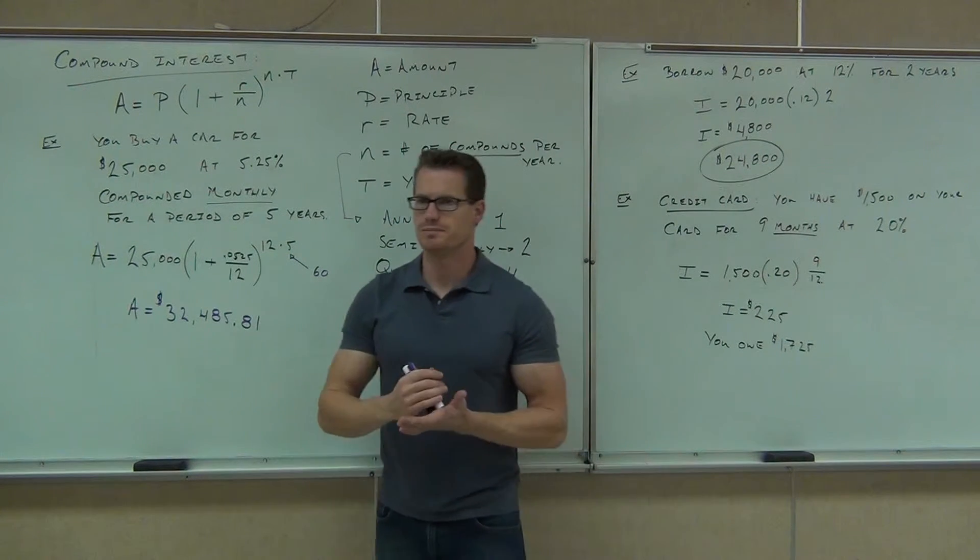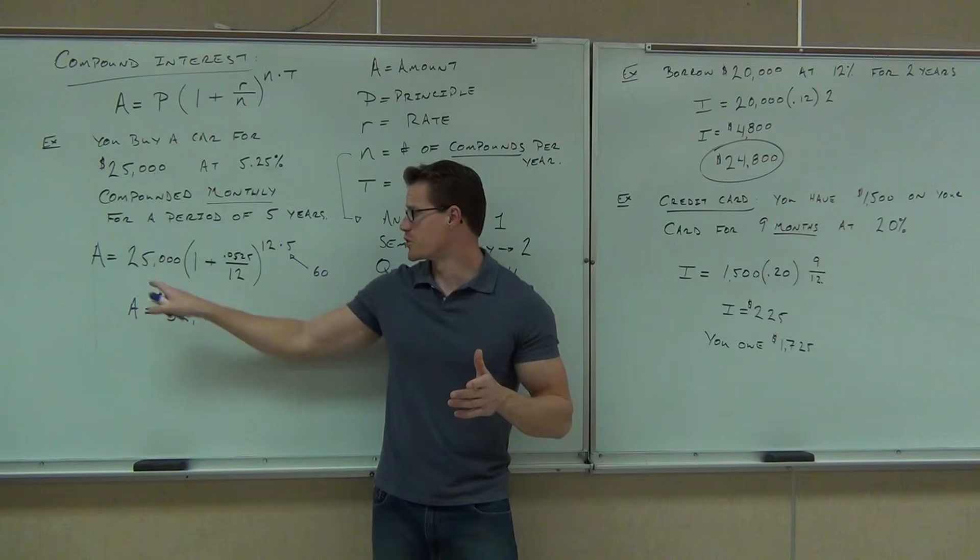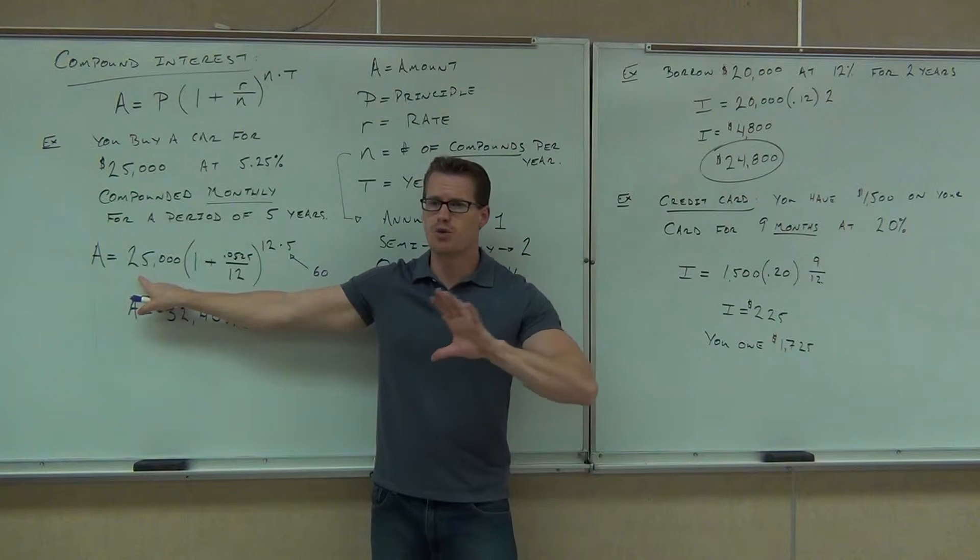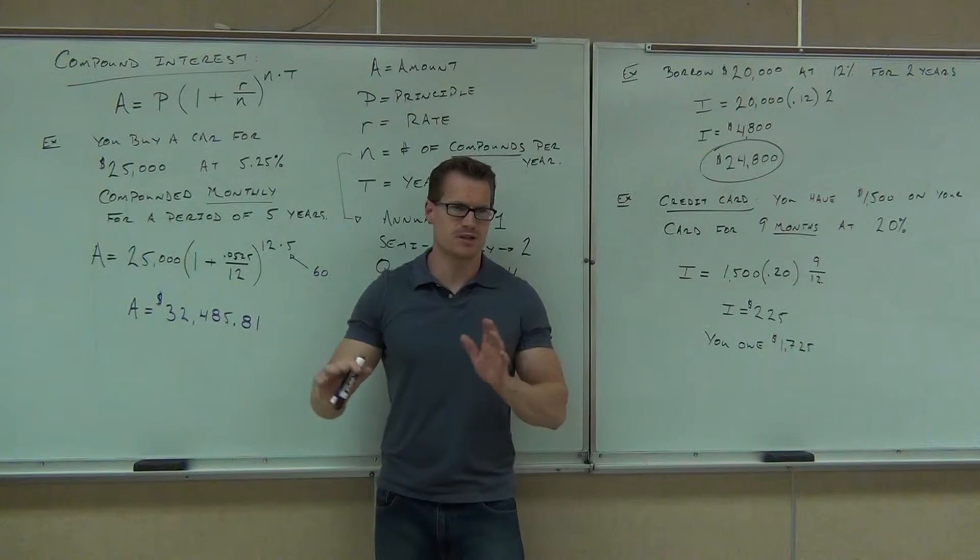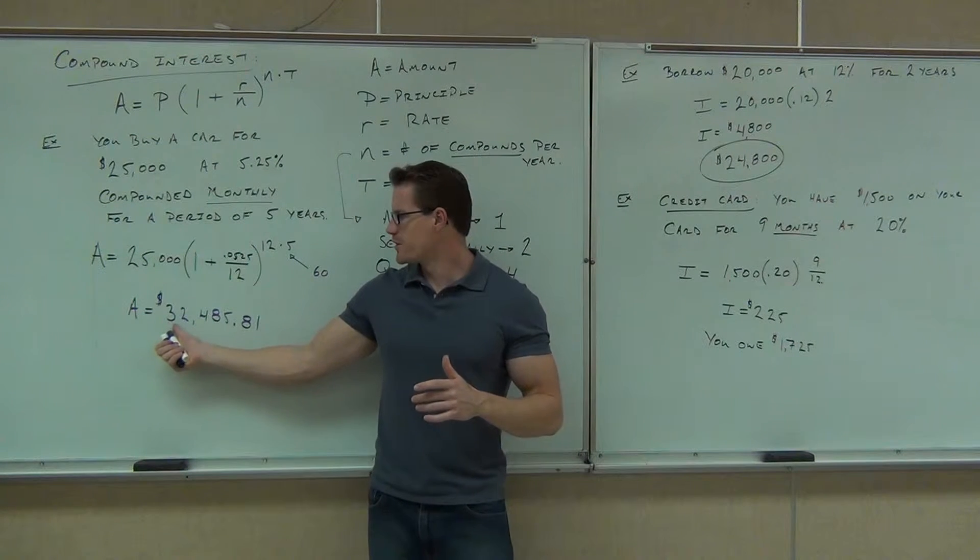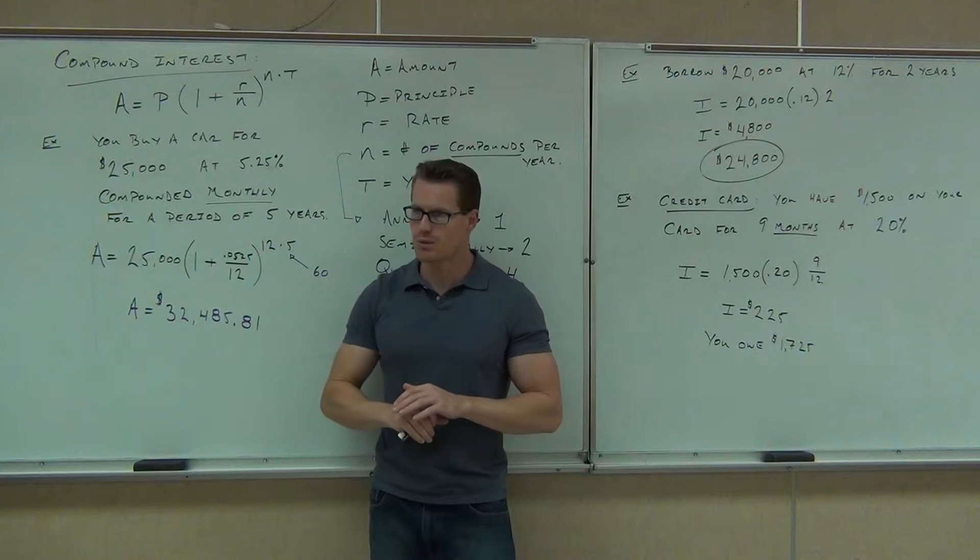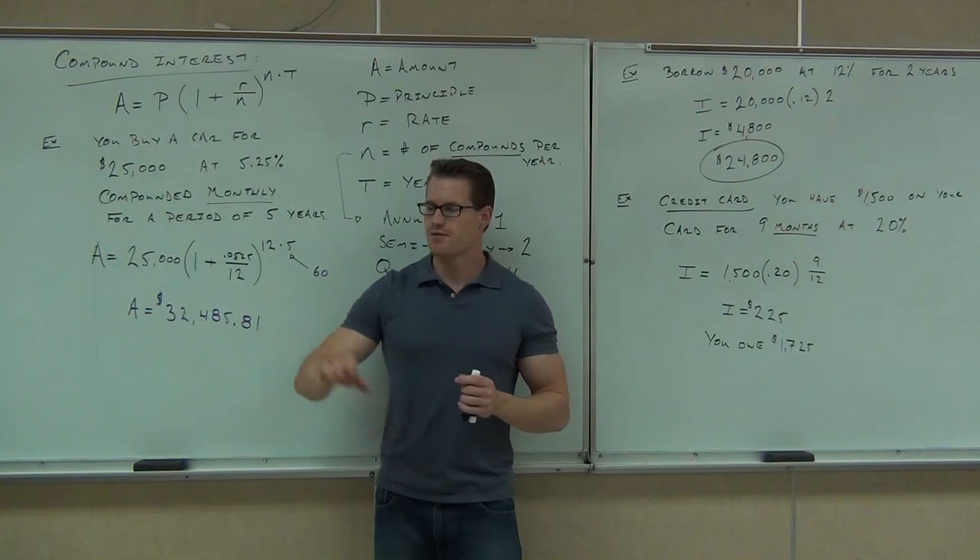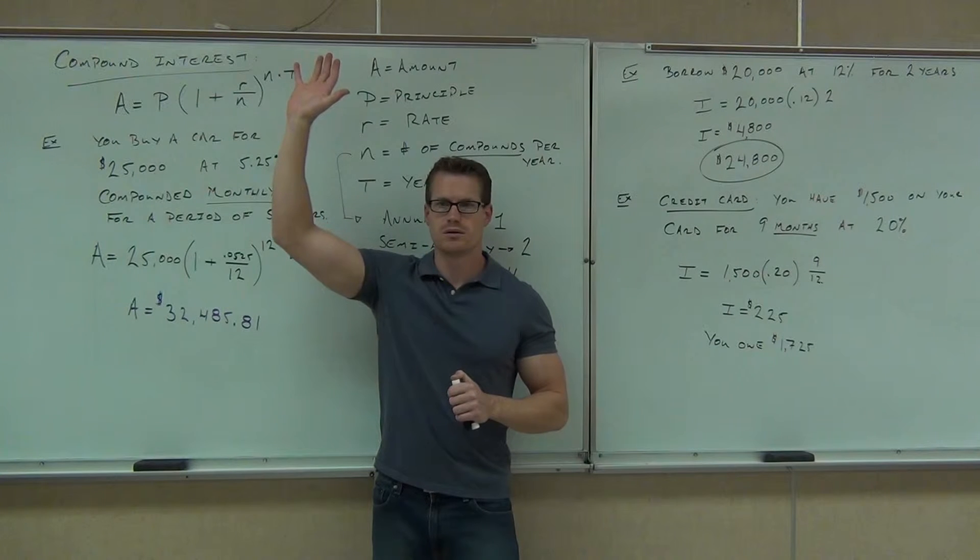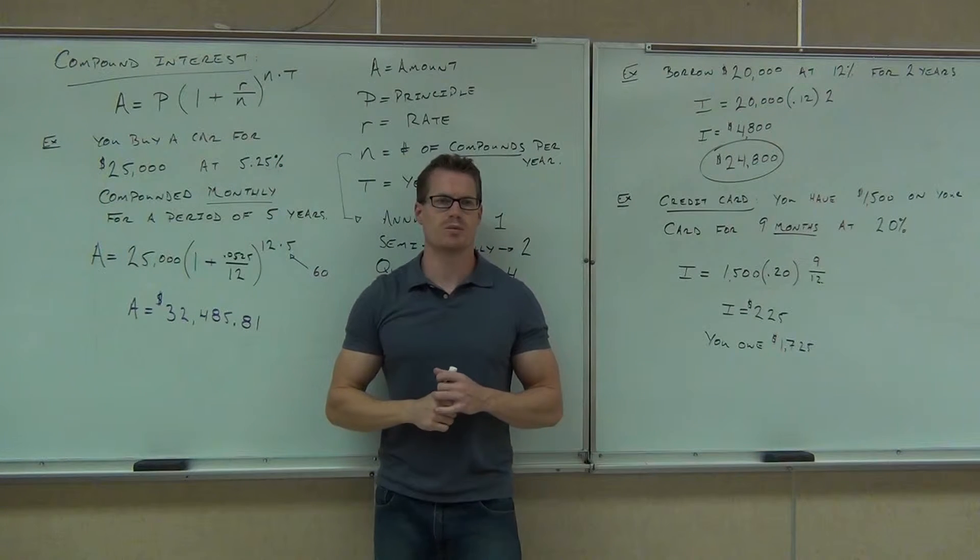So here's what this says to you. If you went and bought your car for $25,000, made no payments whatsoever for five years, neglecting any late fees, you'd owe them $32,485.81 at the end of those five years if it's compounded monthly. Should you feel okay with this so far? Good.